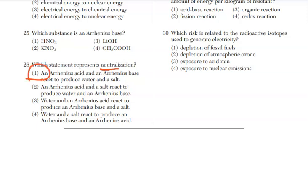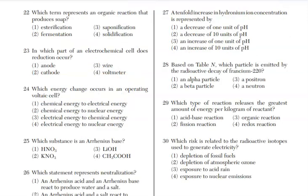Question 27, a 10-fold increase in the hydronium ion. That means it's increasing in acidity. Hydronium ion is H3O+, which is just H+ and H2O. So we're increasing in acidity. If we're increasing in acidity, remember that means the pH is decreasing. And that's exactly what we have, a decrease of one unit of pH, which is choice 1.